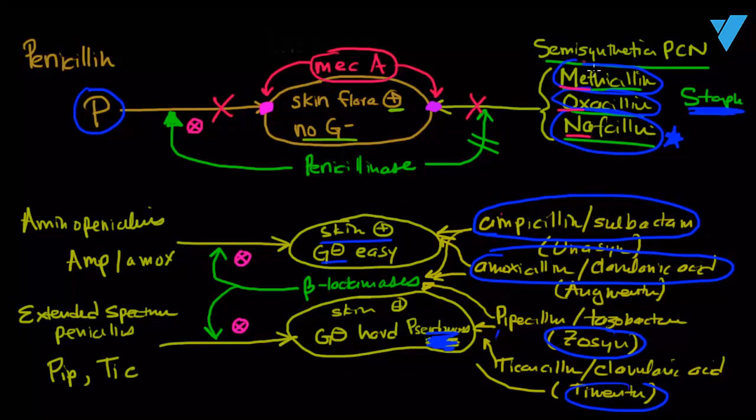So this was known as methicillin-resistant staph aureus. In other words, the MecA gene made MRSA, methicillin-resistant staph aureus. So we had to come up with a completely new way of attacking this organism because the actual binding site itself had been changed.